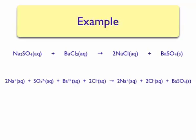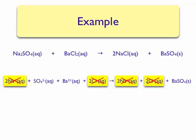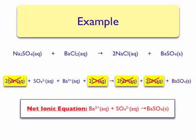To write our net ionic equation, we need to identify the spectator ions. Our spectator ions are the sodium ions and the chloride ions. These can be crossed out, and the leftover species will be contained in our net ionic equation. Therefore, our net ionic equation is: Ba²⁺ + SO₄²⁻ → BaSO₄(s). Note that in the net ionic equation, the barium ion is written first — this is customary, as metals are usually written first in chemical equations and chemical formulas.